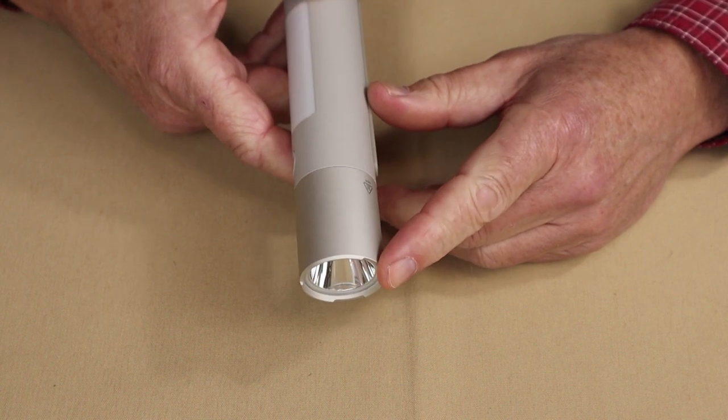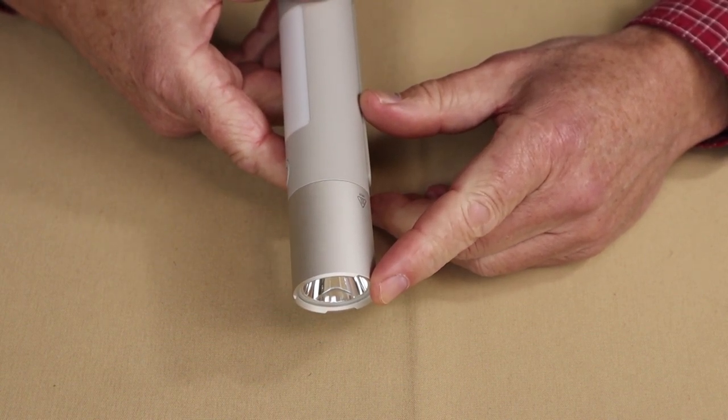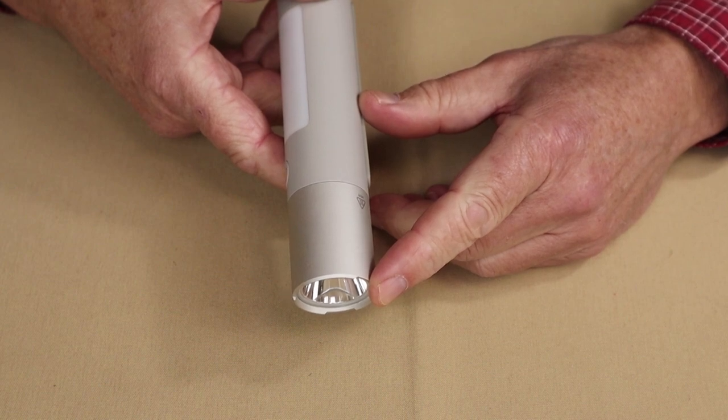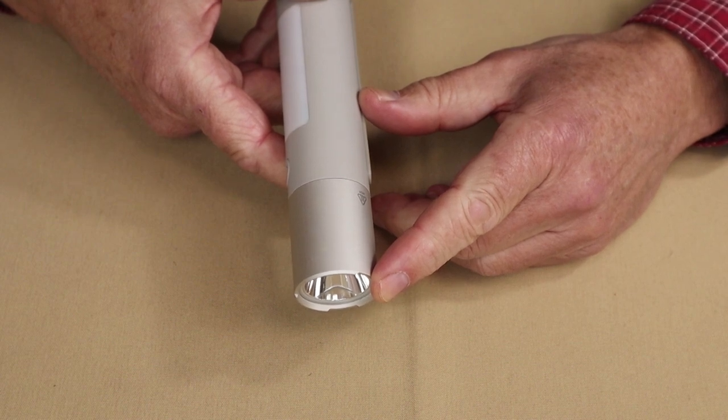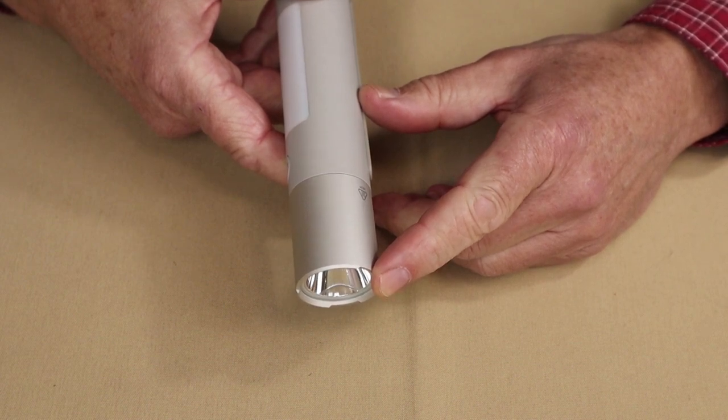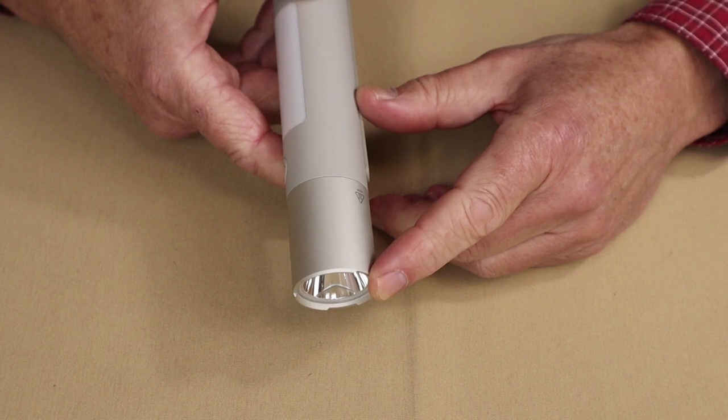So the flashlight has a low setting of 50 lumens which will run for 30 hours and has a beam cast of 40 meters, a medium setting of 300 lumens which will last for six hours and has a beam cast of 120 meters, and it has a high setting of 1000 lumens which will run for four hours without step down and have a beam cast of 210 meters.